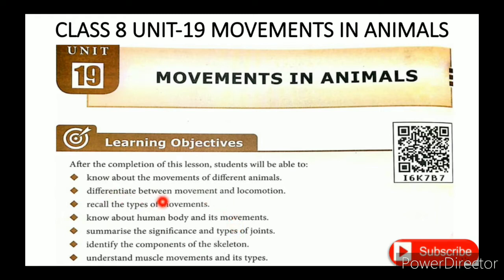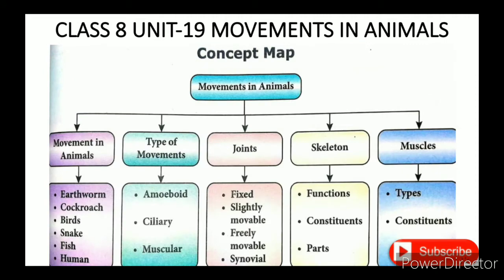This is the difference between movement and locomotion. Now the movement of different animals. The second topic is movement in animals, the third topic is types of movement, the fourth topic is joints, the fifth topic is skeleton, and the sixth topic is muscles.